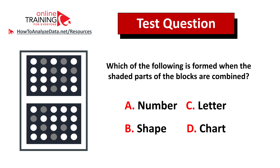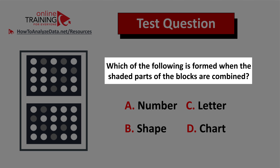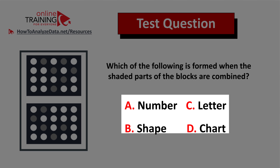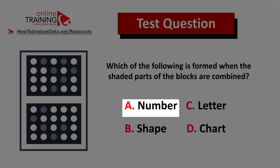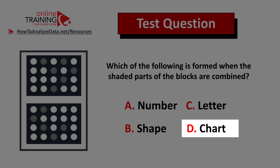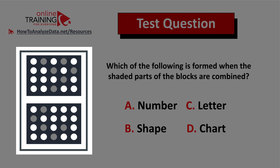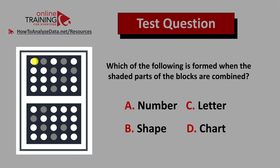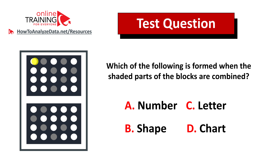Here's the tricky question from the real test, but somehow I have a feeling that you might come up with the answer on your own. Which of the following is formed when the shaded parts of the blocks are combined? You have four different choices. On the left, you're presented with two blocks — two 4x5 blocks, and each block has white and shaded circles. See if you can come up with the answer and determine what happens when all these blocks are combined. Give yourself 10 to 20 seconds.